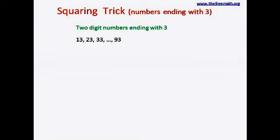This is a squaring trick for two-digit numbers that end with 3, that means 13, 23, 33, 43 and so on up to 93. The squares of such numbers always end with 9. That means whatever my answer is going to be, the last digit of my answer is going to be always 9.